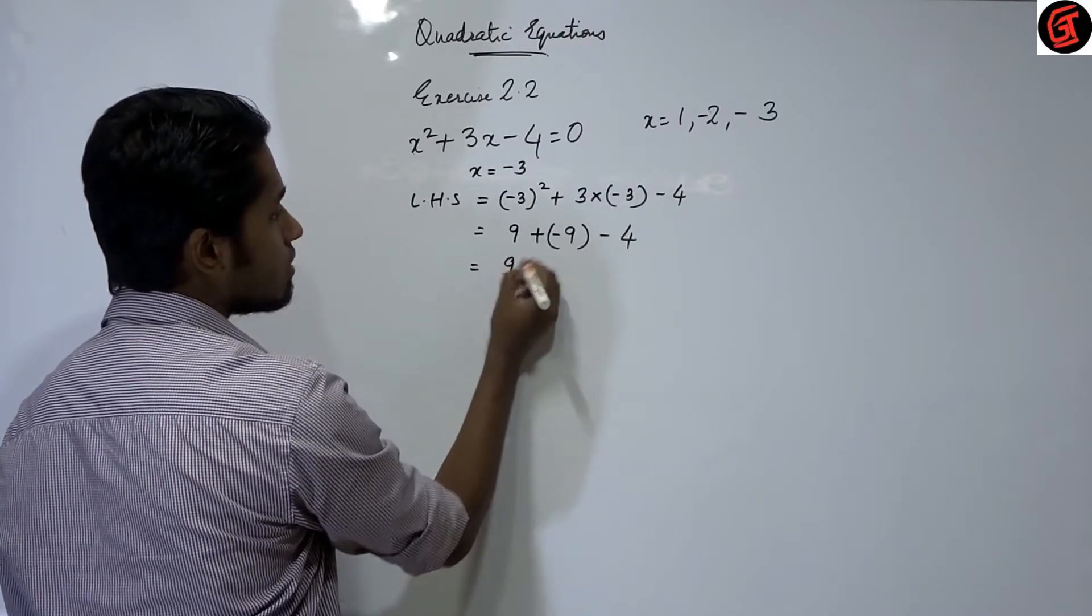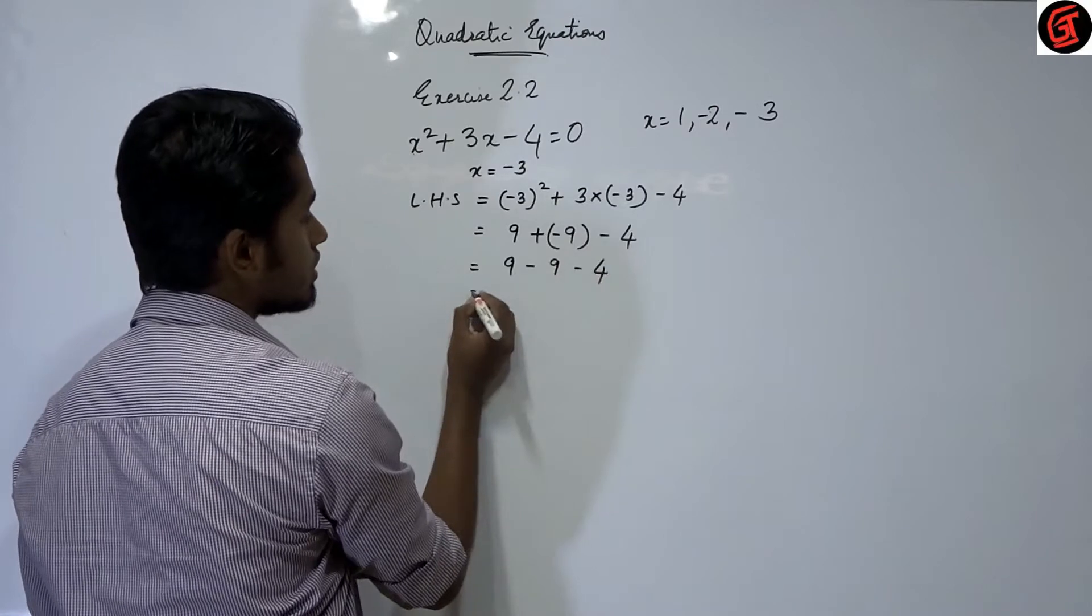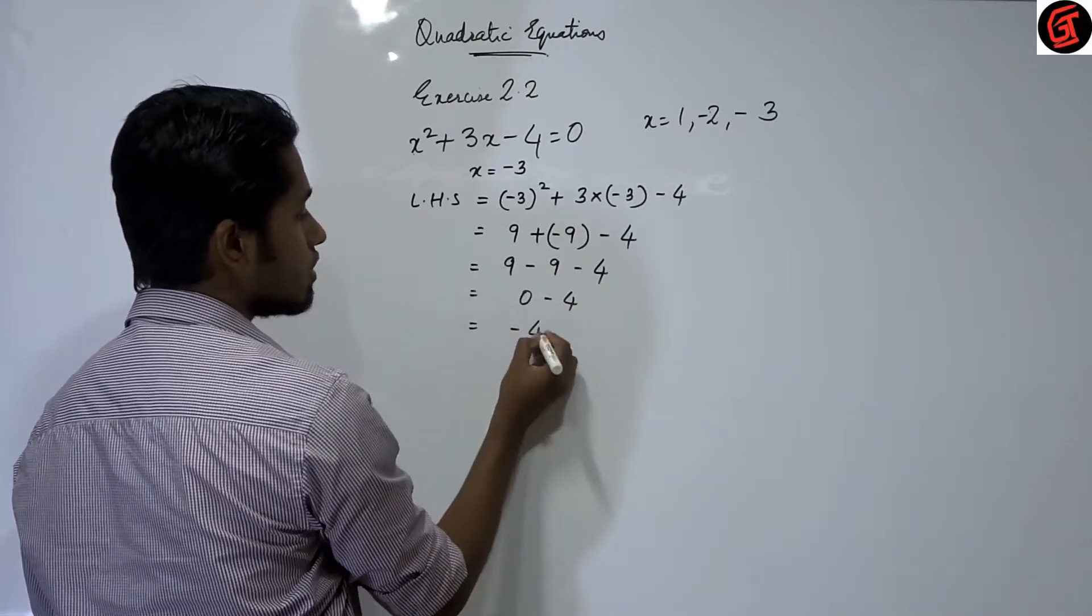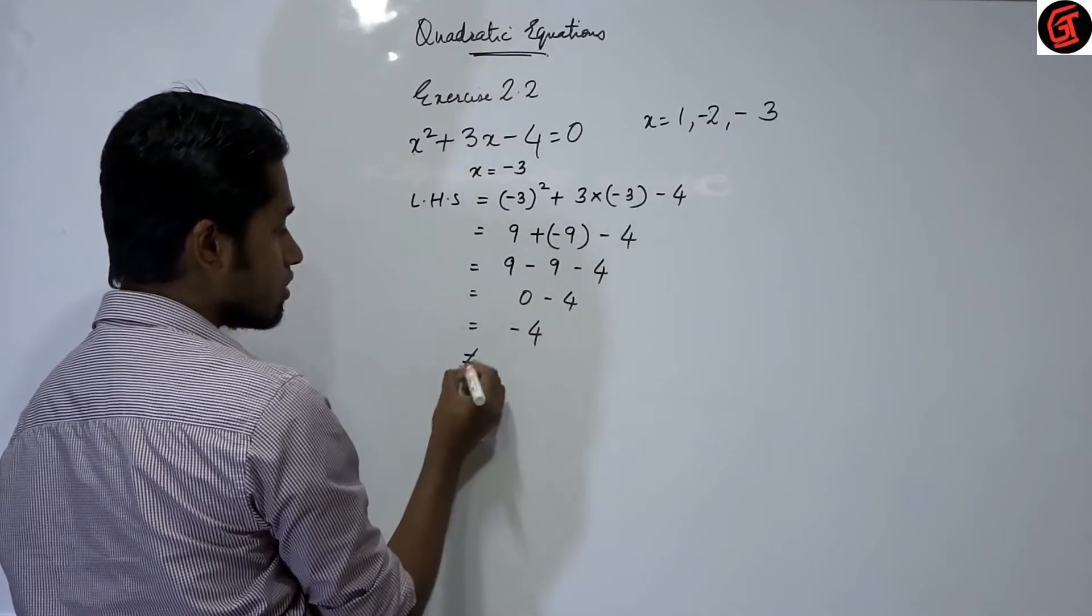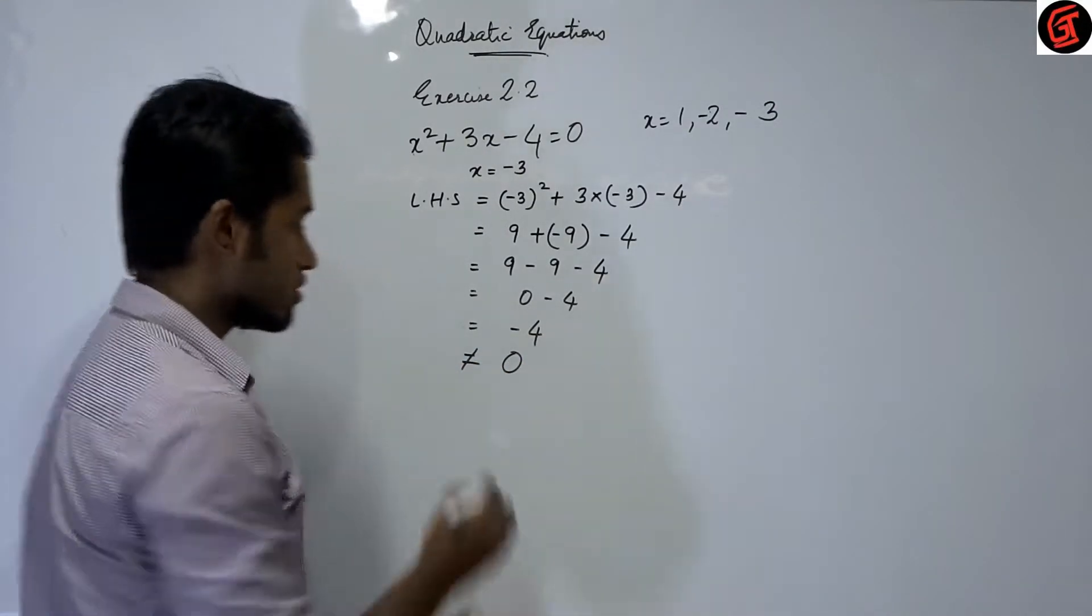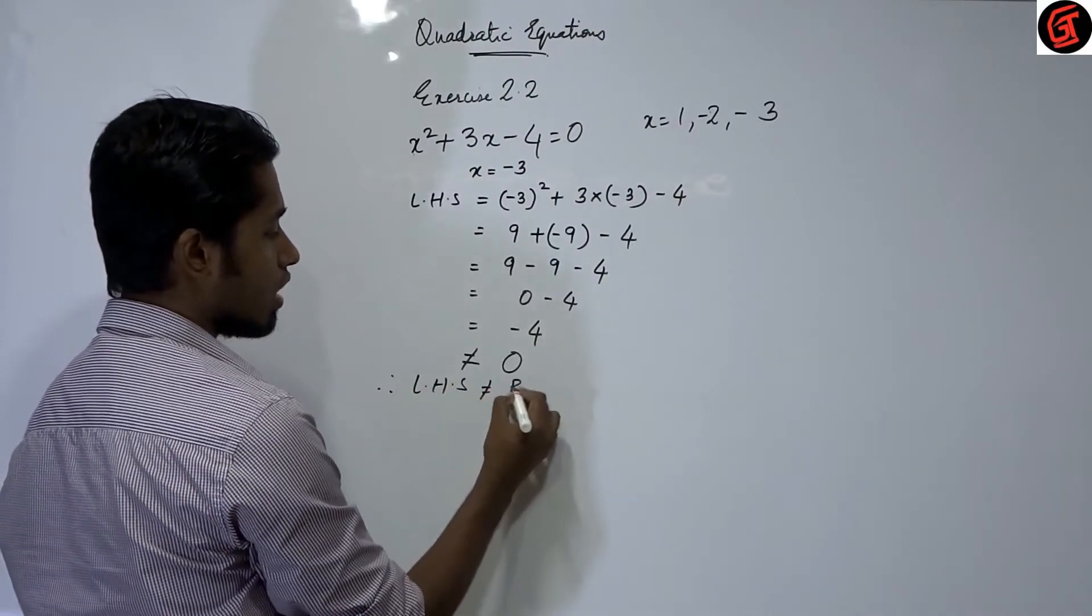That is equal to 9 plus minus minus 9 minus 4. That is equal to 0 minus 4. That is equal to minus 4. Now is this equal to 0? No. So this is not equal to 0. Therefore we write LHS is not equal to RHS.